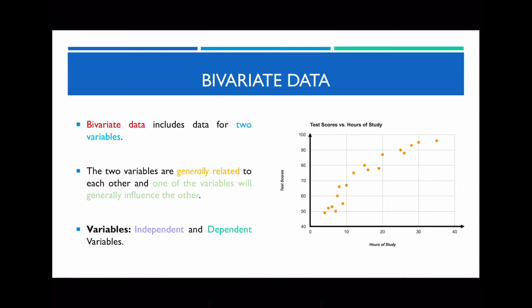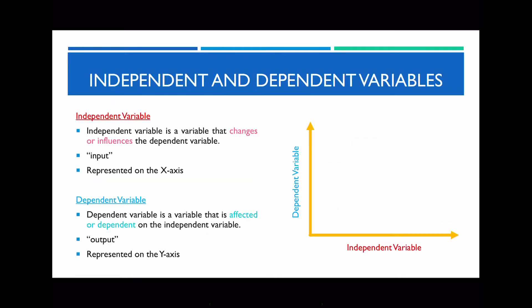These variables are defined as your independent variable and your dependent variable. You should be familiar with these two terms from other subjects such as science. The independent variable is a variable that changes or influences the dependent variable, and we always represent this along your x-axis. In contrast, your dependent variable is a variable that will be affected and is dependent on the independent variable, and this is always going to be represented along your y-axis.